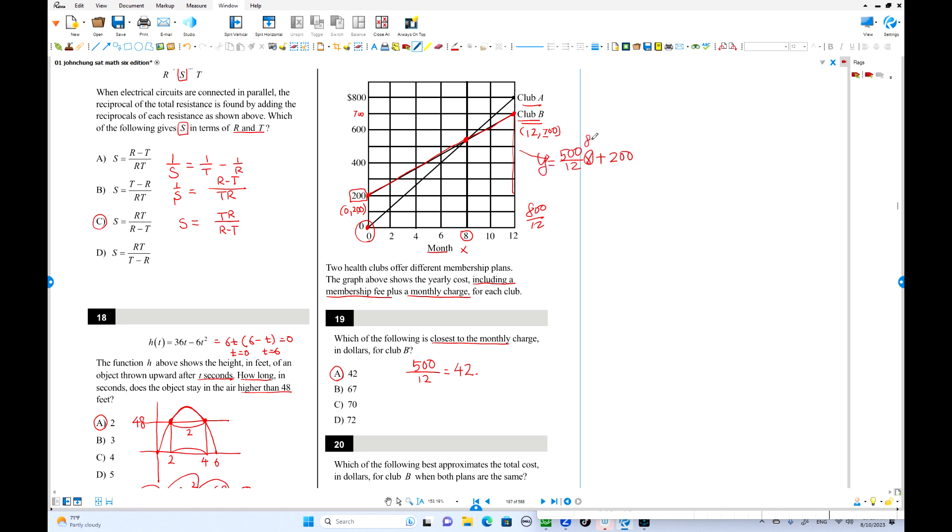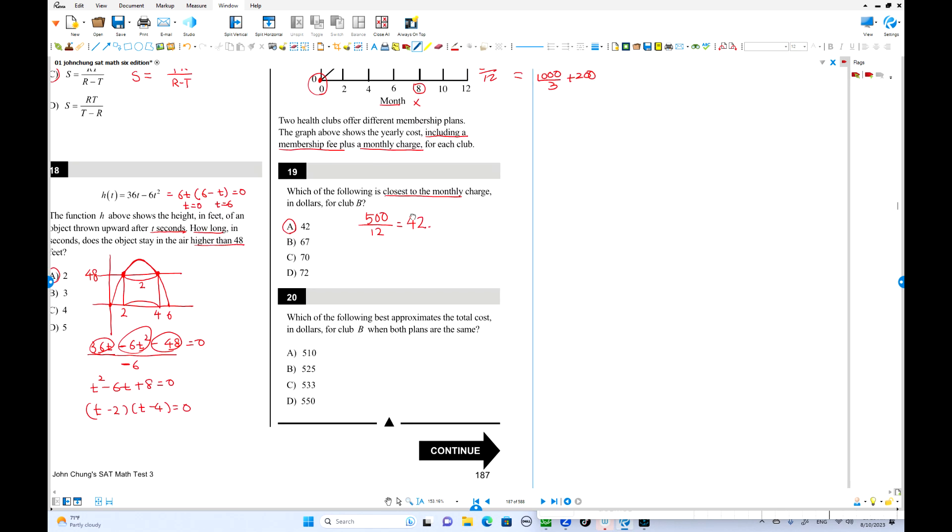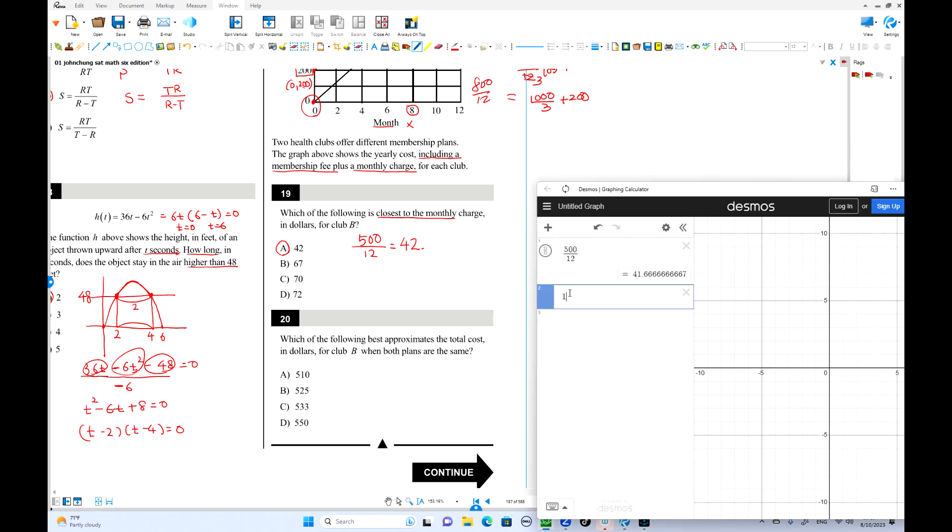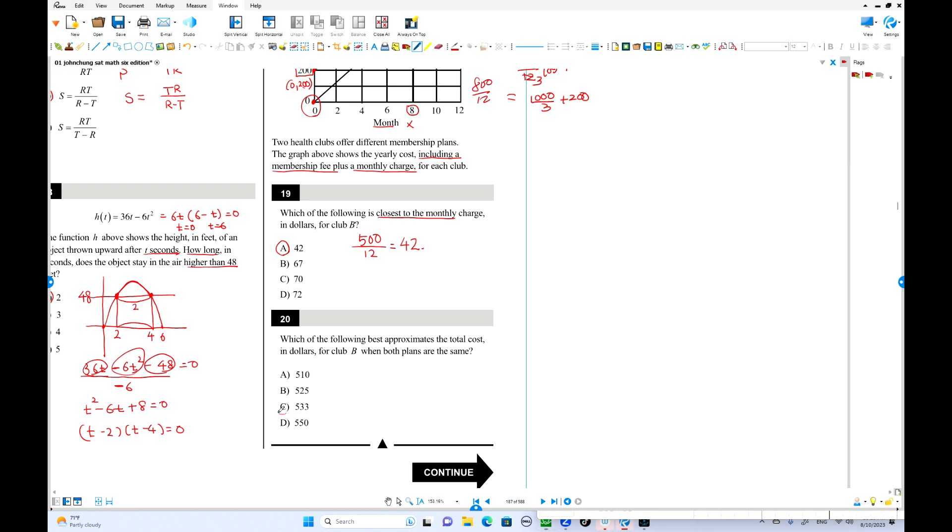Because x equals 8, so the amount is 500 over 12 times x, which is 8, plus 200. So this is 2, this is 3. 1000 over 3 plus 200. Approximate total cost, so use calculator again. 1000 over 3 plus 200 is 533. Approximate 533 is the answer.